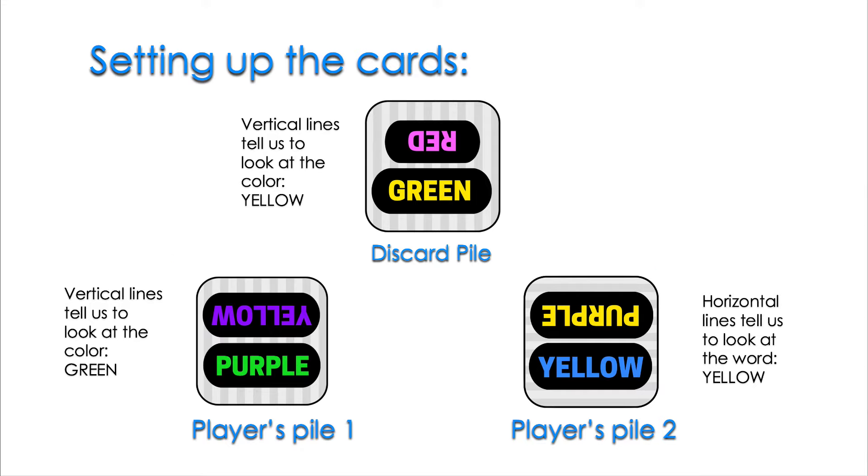In this example, player one's card has vertical lines that tells us to look at the color, green. This does not match the discard pile that has vertical lines that tells us to look at the color yellow.